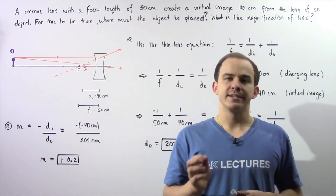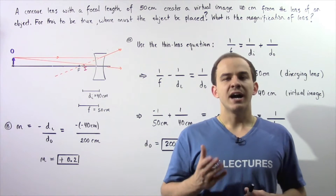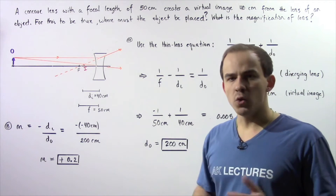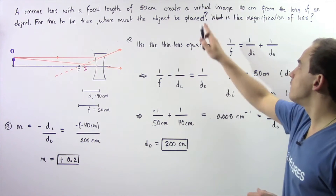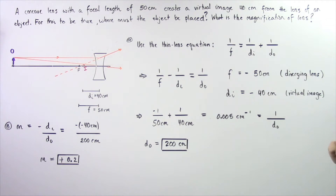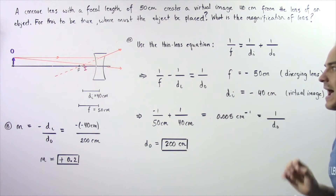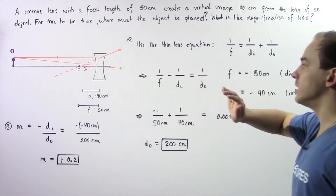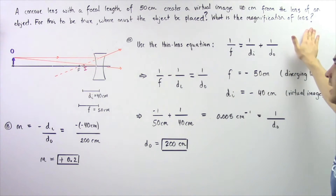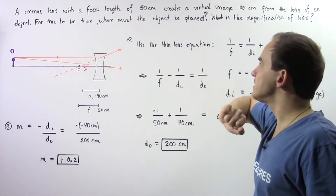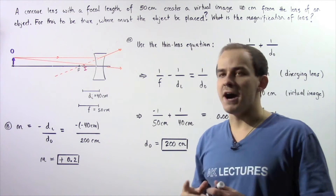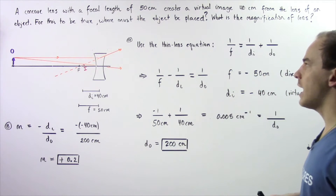In this lecture, we're going to look at an example that deals with concave or diverging lenses. A concave lens with a focal length of 50 centimeters creates a virtual image 40 centimeters from the lens of some object. For this to actually be true, where exactly must we place the object from the lens, and what is the magnification of the lens? In part A, we want to solve for the object distance, and in part B, we want to find the lateral magnification of our lens.